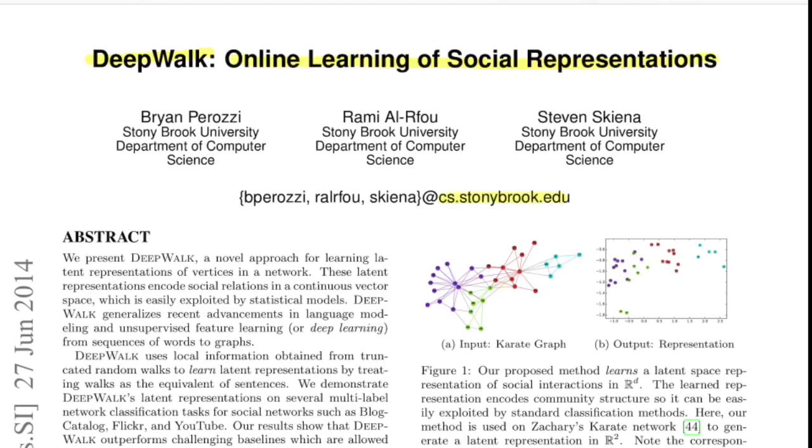This came out from Stony Brook University in the year of 2014. This paper is one of the early foundational works that looked into how to apply deep learning based approaches for networks. At a very high level, this paper introduces a novel approach of learning a dense vector representation for a given node in a network using feature learning based approaches that are prominent in the field of NLP.